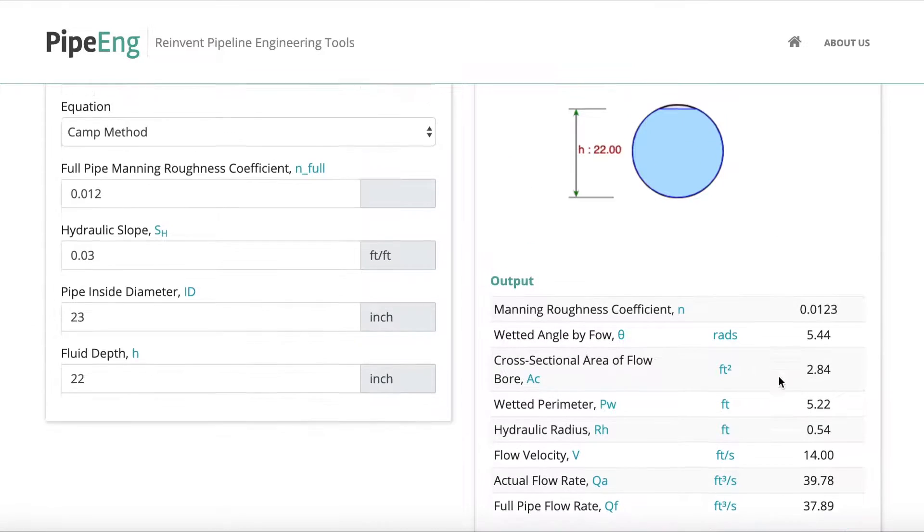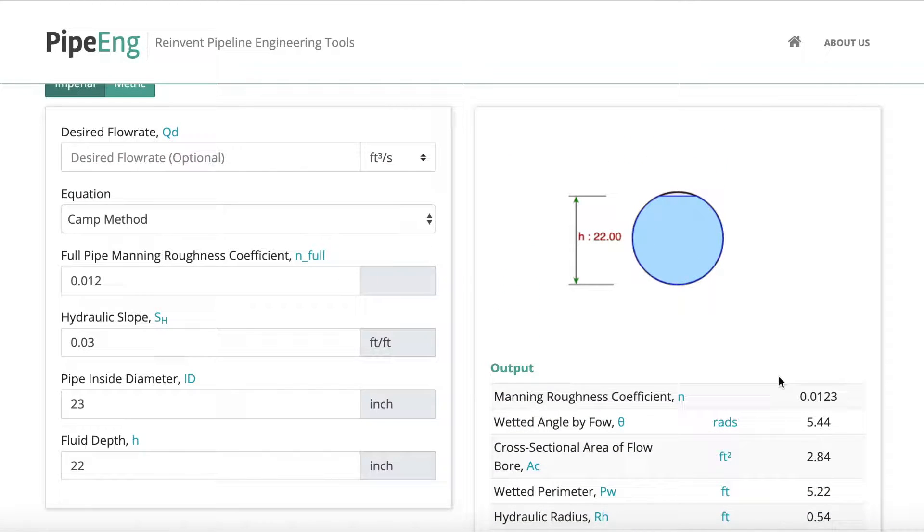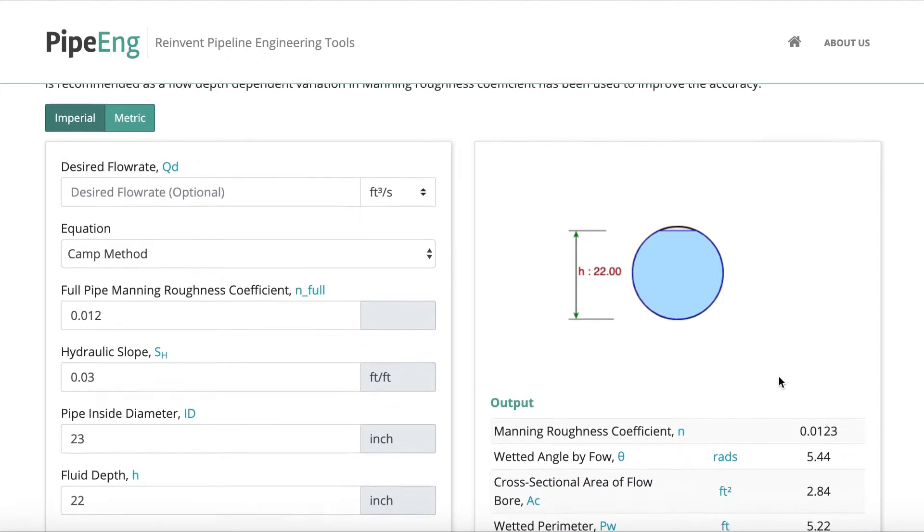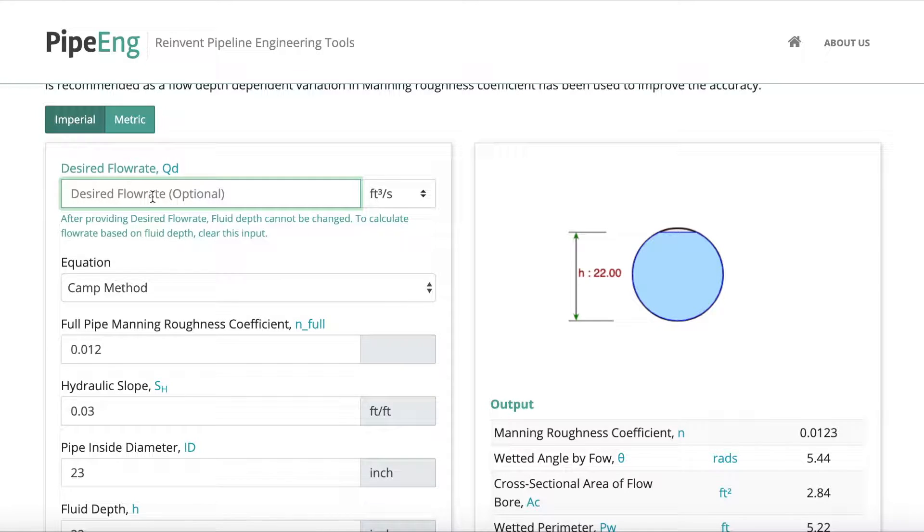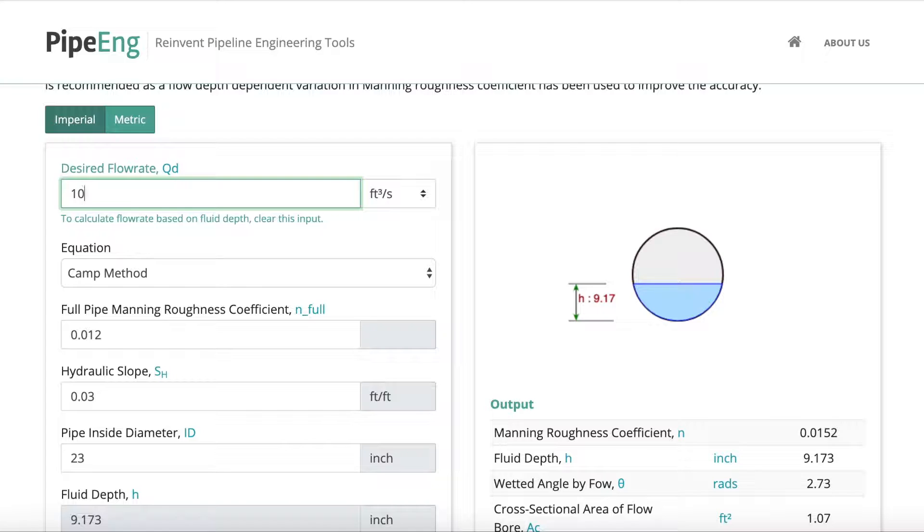Okay, so let's take a look at another scenario where you know the design flow rate, you don't have a line size yet, you know the slope available to install this open channel pipeline. And then you can use the design flow rate input here. Let's say you want to design this pipeline to 10 cubic feet per second.